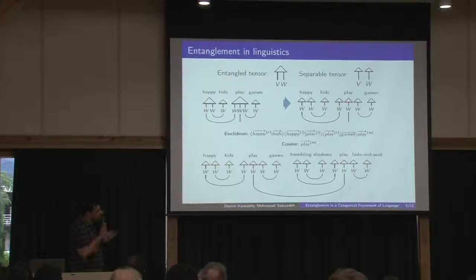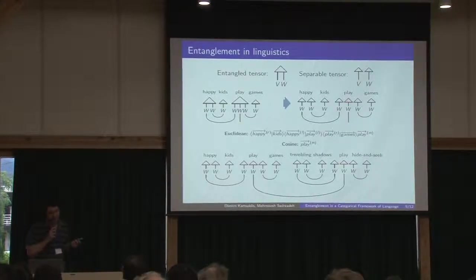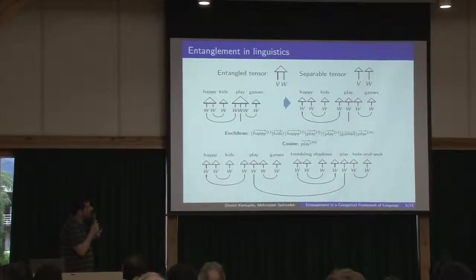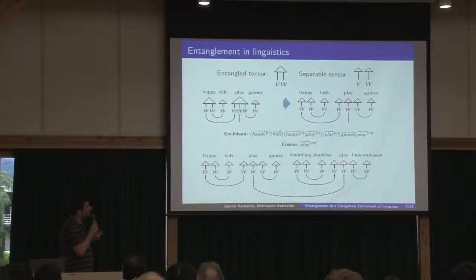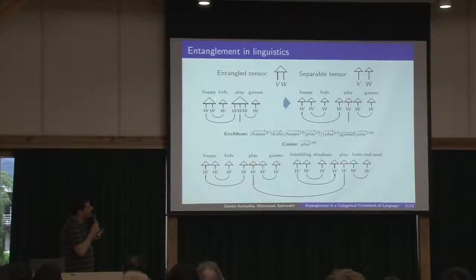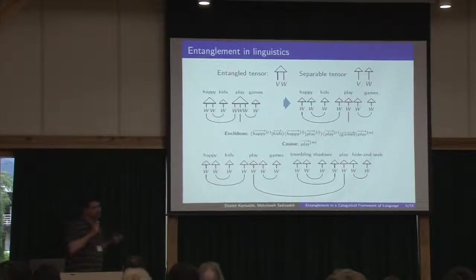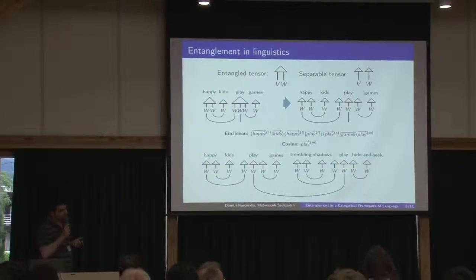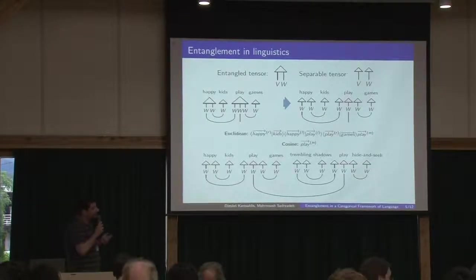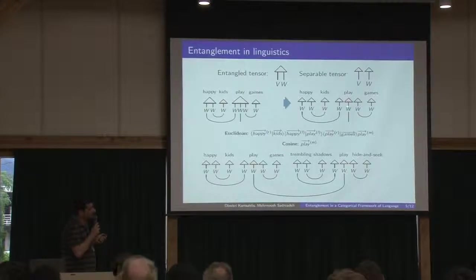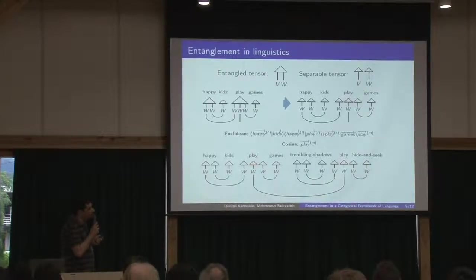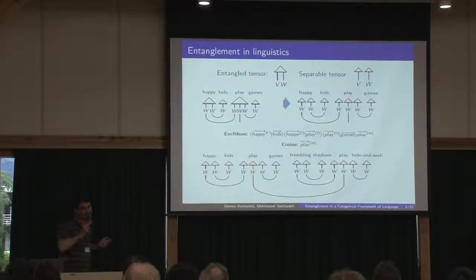So basically there is a certain analogy here with categorical quantum mechanics. Here we have a composition and we need entanglement for these things here in order for the subsystems to communicate with each other. In case that entanglement is not present, then the result we get is something like this. So basically the whole composition here collapses to just the middle component of the play tensor.